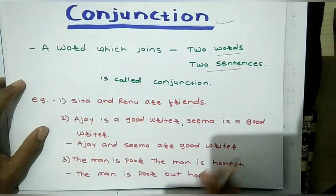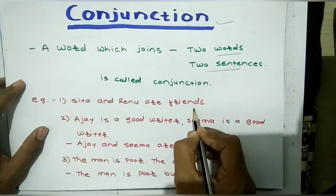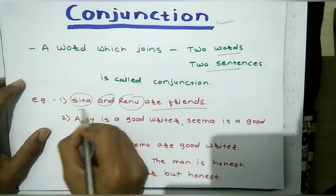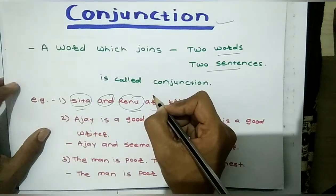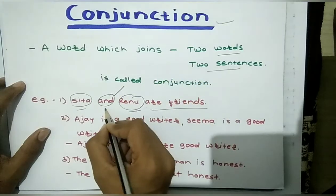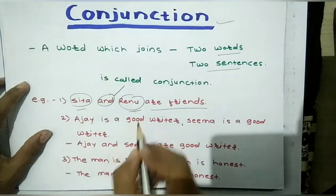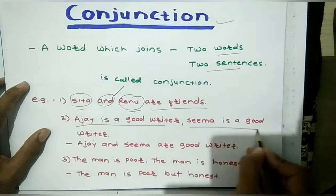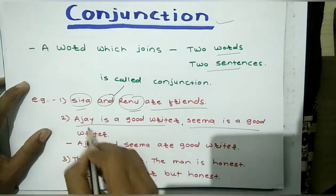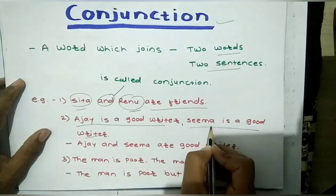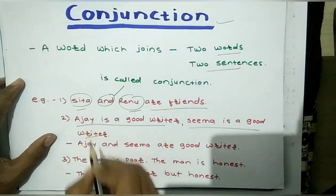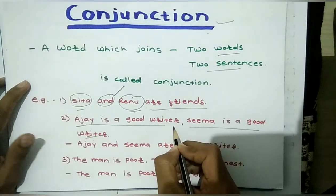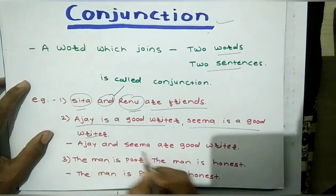Let's see through an example: 'Sita and Renu are friends.' Here, Sita is one word and Renu is another word, and 'and' is joining those two words — that is why 'and' is acting as a conjunction. Another example: 'Ajay is a good writer' and 'Seema is a good writer' are two sentences. Using conjunction, we can join these two sentences into one without changing the meaning: 'Ajay and Seema are good writers.'